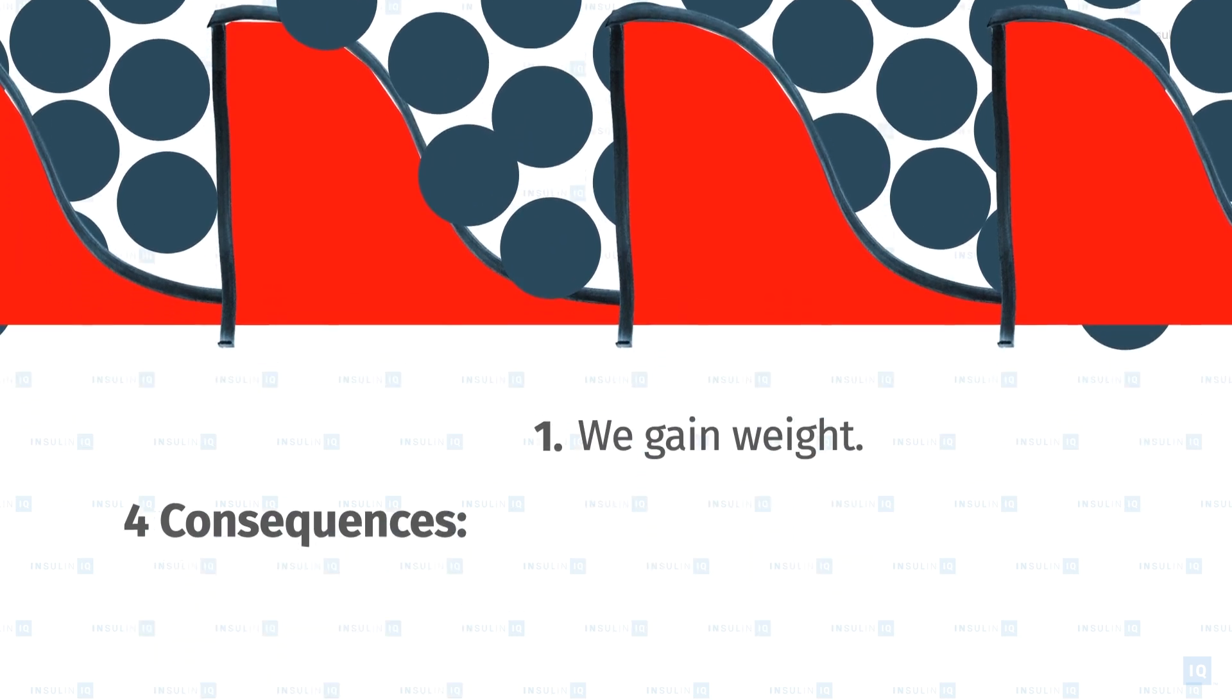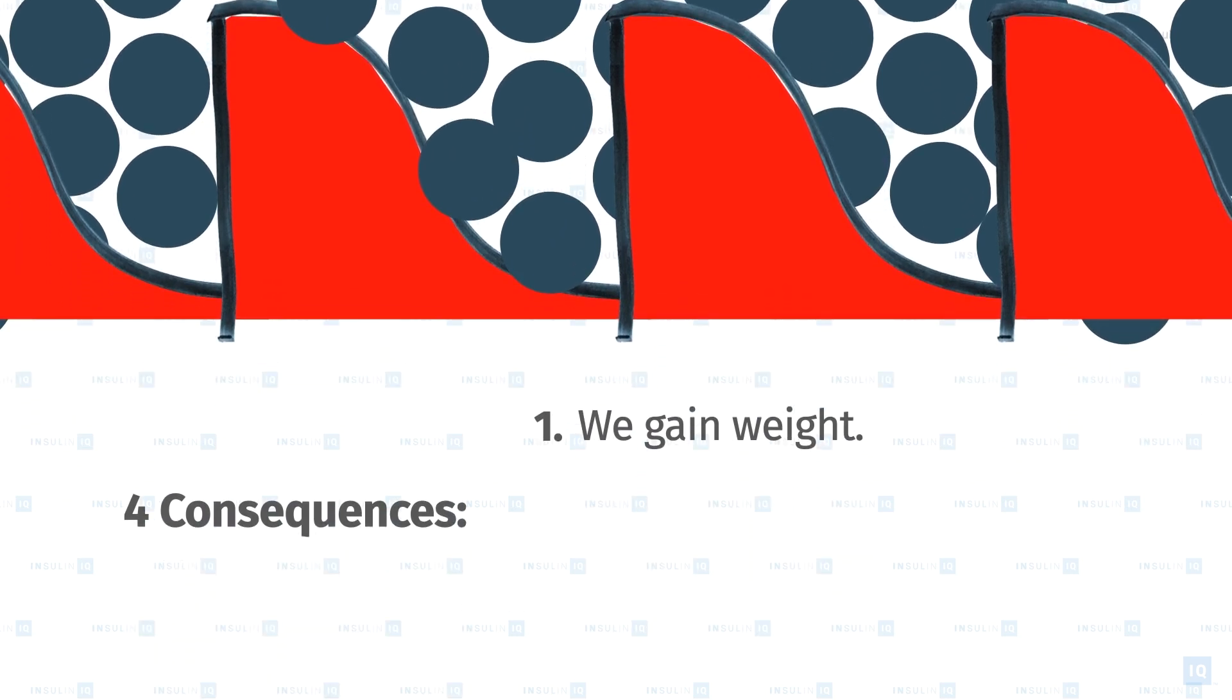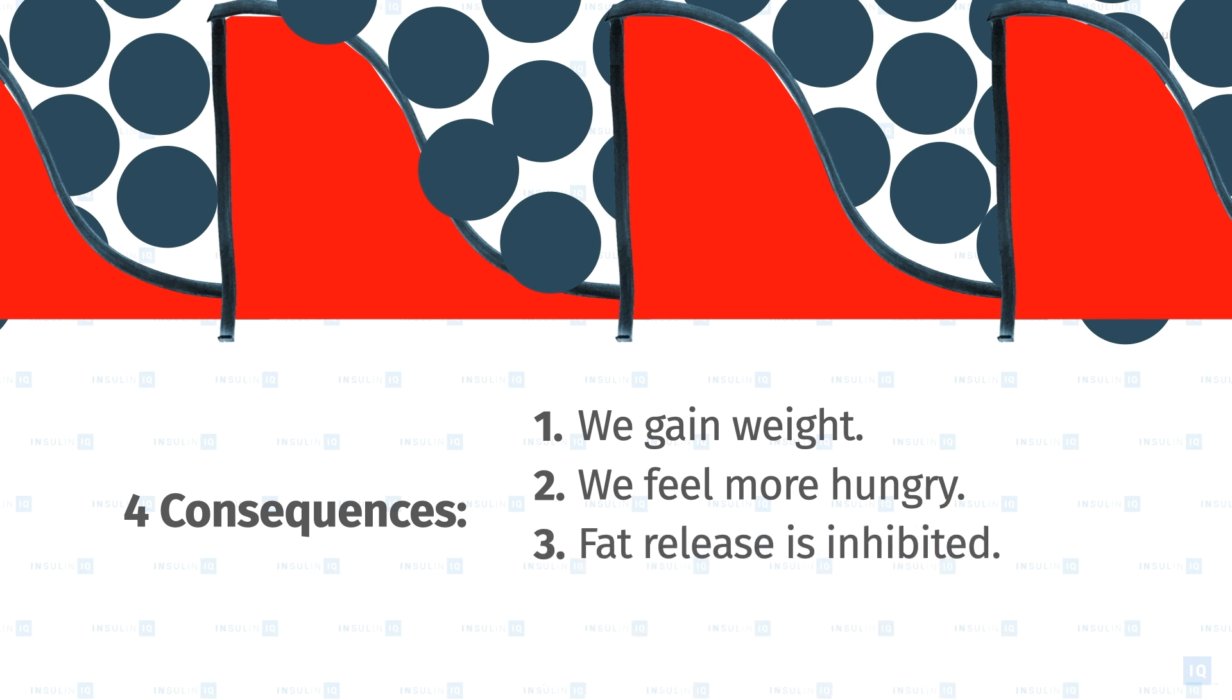First, we gain weight. Second, we feel more hungry all the time. Third, fat release from our cells is inhibited by the flood of readily available energy in the form of carbs and sugar. And fourth, we become insulin resistant.